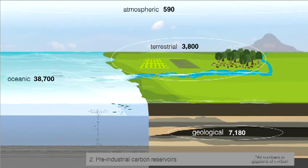The amount of carbon estimated to have been contained in the Earth's major carbon reservoirs prior to the year 1800 is reflected here. All figures are scientific estimates and are represented in gigatons, or billions of tons, of carbon.